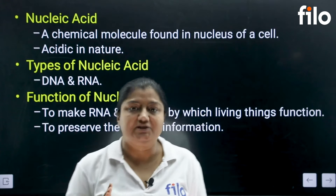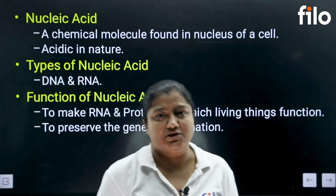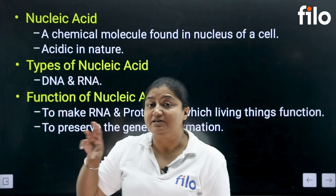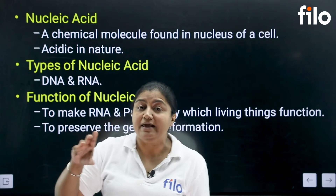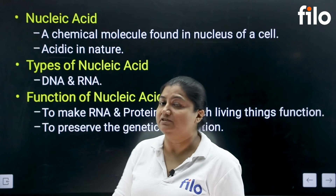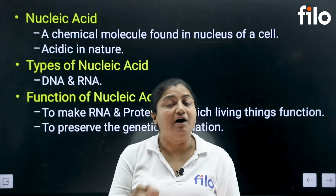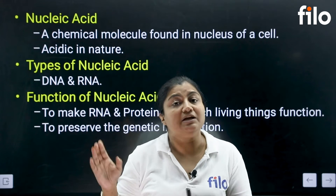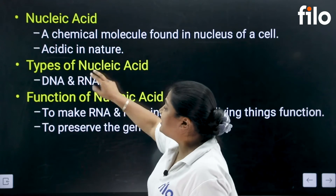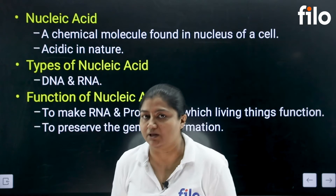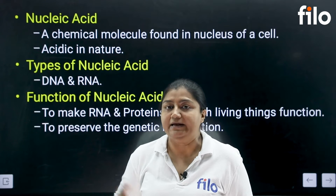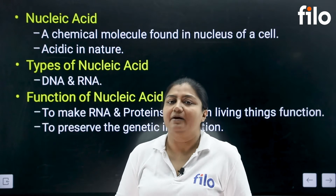Now, if we talk about nucleic acid, it becomes three things: sugar, phosphate, and nitrogenous base. There is also a base, but the acidic nature is not because of that base — it is because of the phosphoric acid. Nucleic acid has two types: DNA and RNA, that is deoxyribonucleic acid and ribonucleic acid.